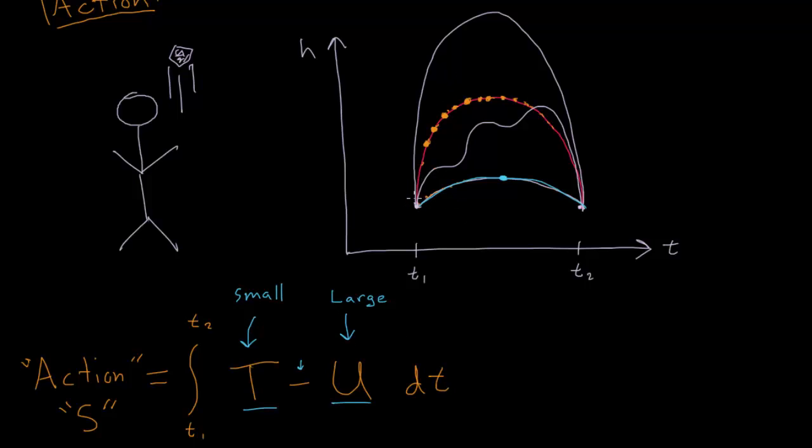And then as the opposite extreme, we can think about a very tall trajectory where it goes very high. It does a good job of having a large potential energy. But to get up that high, it had to go really fast, and then it actually falls down really quickly too. So it throws away this small kinetic energy goal. So the real path, this pink path that we've drawn here, is the result of this balancing act between having a small kinetic energy and a large potential energy.